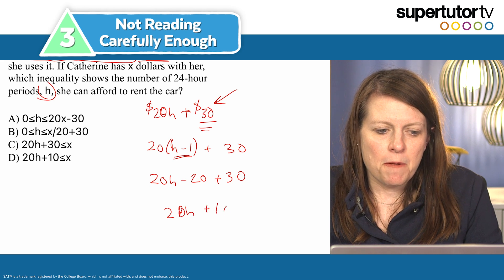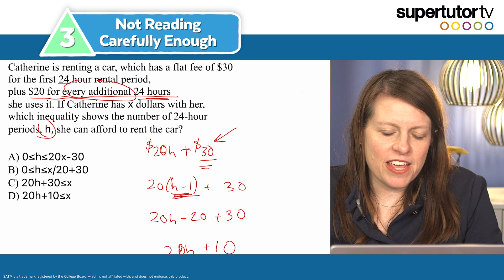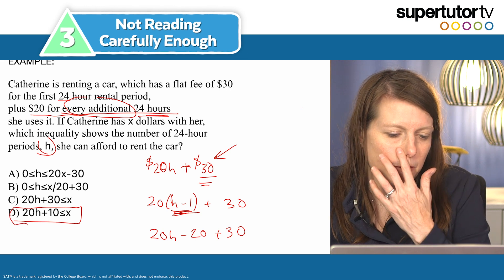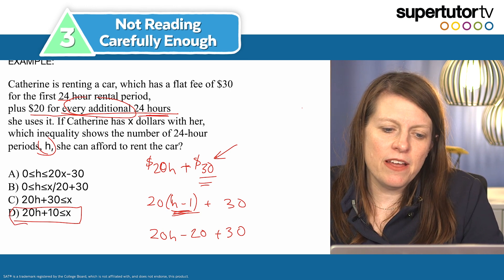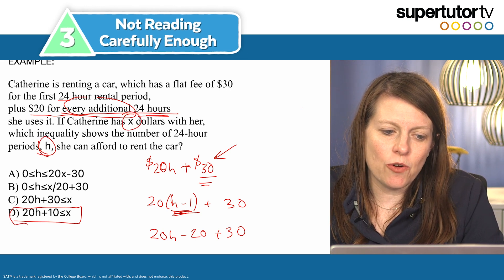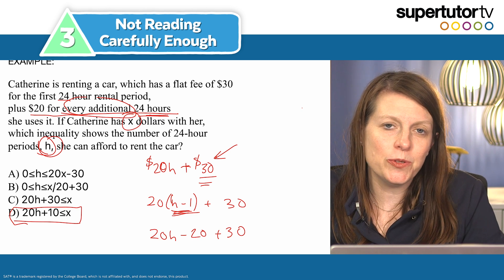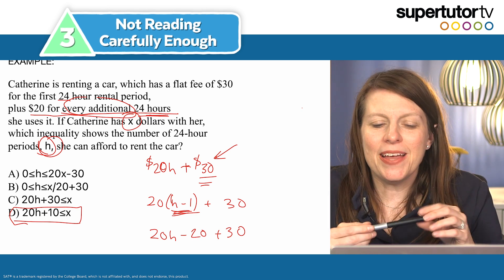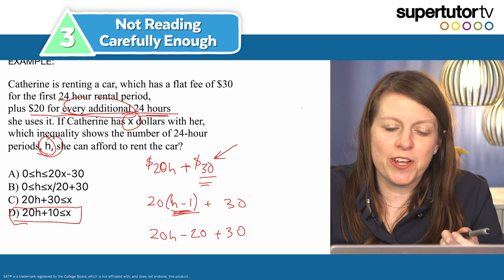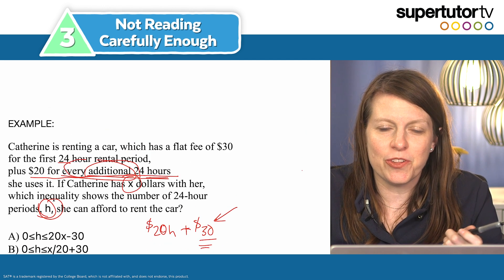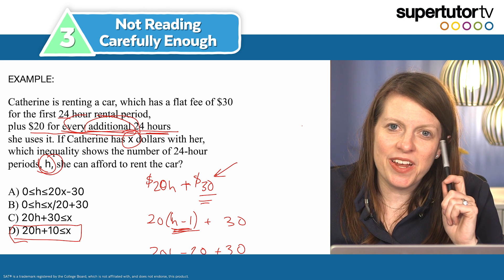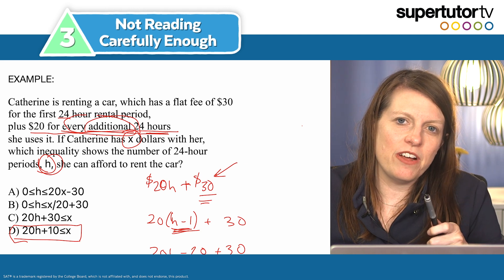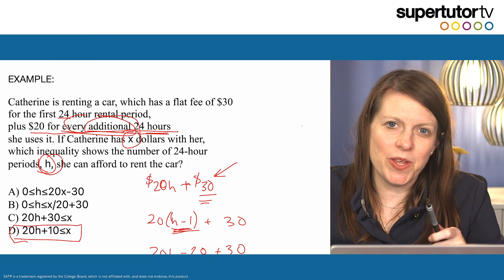So the h minus 1 form is what you're actually looking for — it's been simplified to 20h + 10 in the answer choices. Also be careful not to mix up your variables x and h — keep your variables straight. That detail-oriented kind of mistake in word problems — forgetting the word 'additional' — is something to watch out for. Keep your eyes peeled.